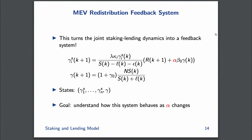Once you have this solution, you plug it back into each agent's portfolio update, giving a bona fide feedback system. The only free variables are the reward schedule R(k+1) and what the protocol decides to burn or hold as protocol-owned liquidity. The states of the system are the N staking yields for all N agents plus one lending yield — an N+1 dimensional system. Alpha, the fraction of MEV redistributed to stakers, shows up in these dynamics, and the goal is to understand how the system behaves as alpha changes.